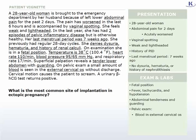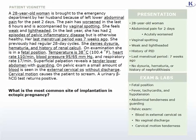Abdominal exam reveals tenderness and guarding. Speculum exam reveals a small amount of blood at the cervical os; no vaginal discharge was noted. Manual pelvic exam is positive for cervical motion tenderness. Urinary beta-HCG is positive. This patient's left lower abdominal pain, associated with amenorrhea, signs of hypovolemia, peritoneal irritation, vaginal bleeding, cervical motion tenderness, and positive beta-HCG, suggests a ruptured ectopic pregnancy.